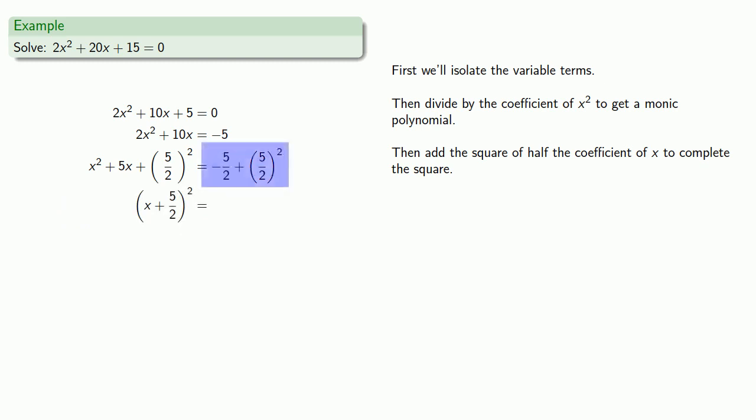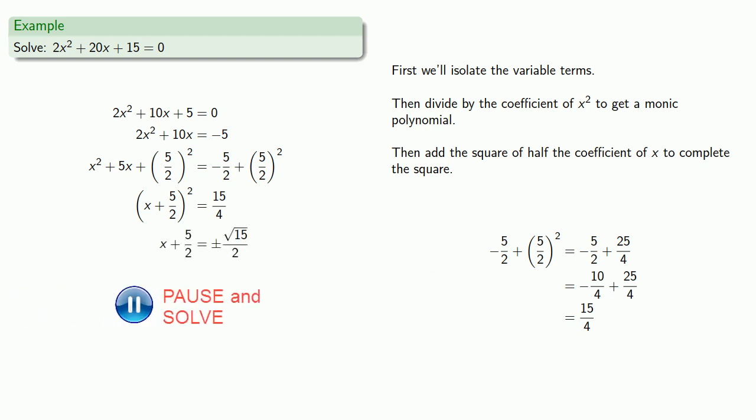Our right-hand side is the sum of some fractions, so we'll go ahead and compute that as well. Take the square root of both sides and solve for x. Take the square root of both sides.